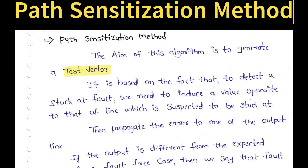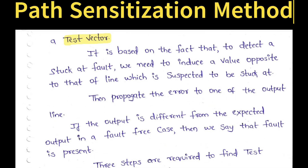Suppose if we consider a 2-input AND gate, it contains 2 inputs, so 4 combinations will be there: 0 0, 0 1, 1 0, and 1 1. We call them as test vectors. The method is based on the fact that to detect a stuck-at fault, we need to induce a value opposite to that of the line which is suspected to be stuck at, then propagate the error to one of the output lines. If the output is different from the expected output in a fault-free case, then we can say that the fault is present.